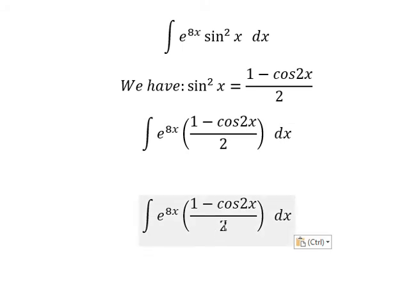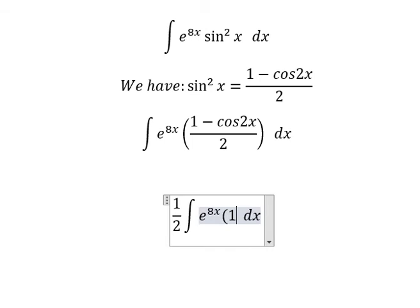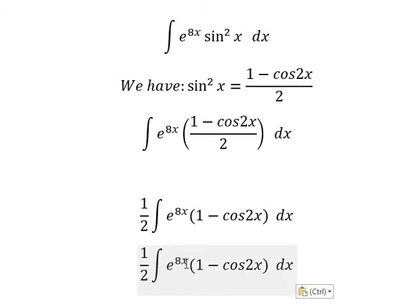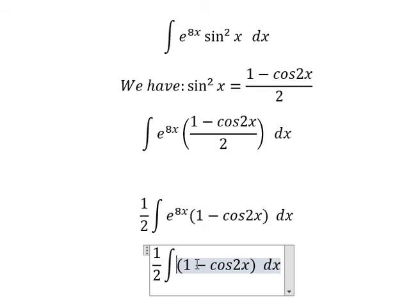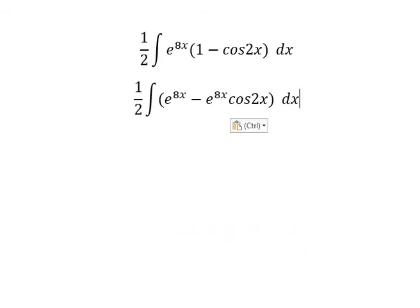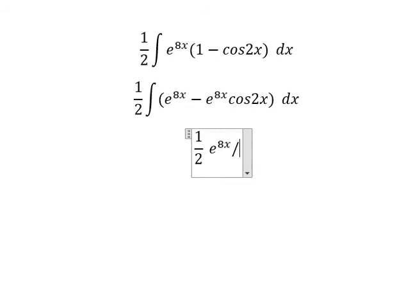Now I will put the 1/2 coefficient outside. Next, we have e to the power of 8x multiplied by 1 minus cosine(2x). The integration of this gives e to the power of 8x over 8 — the 8 being the coefficient of x.